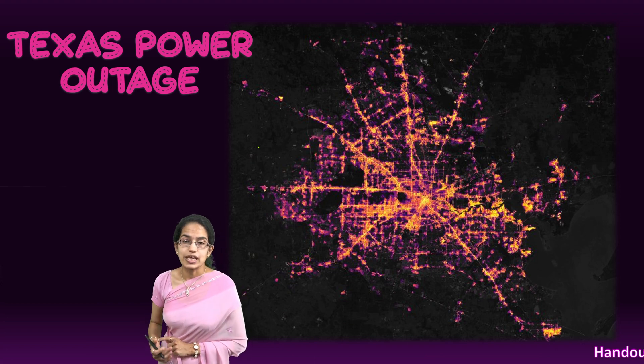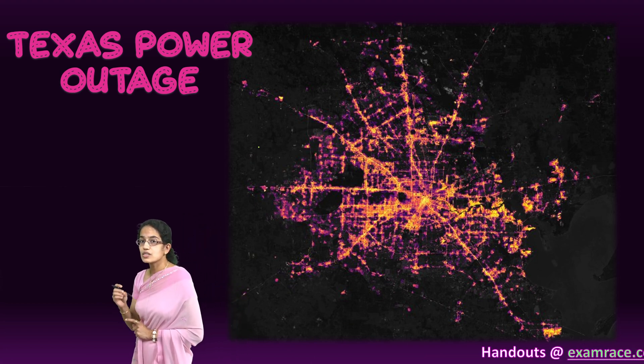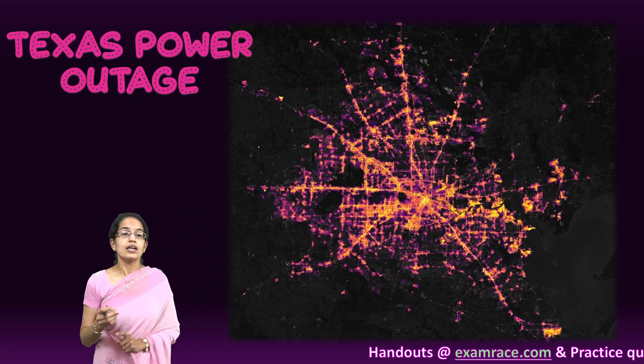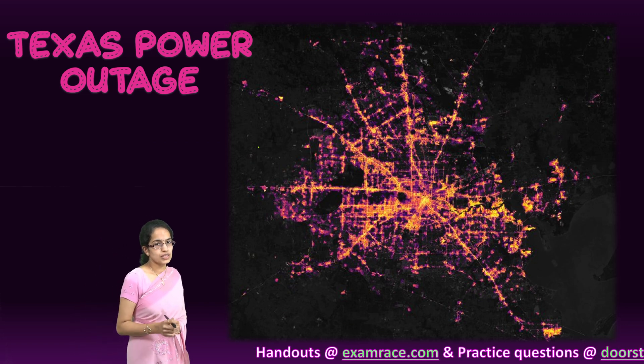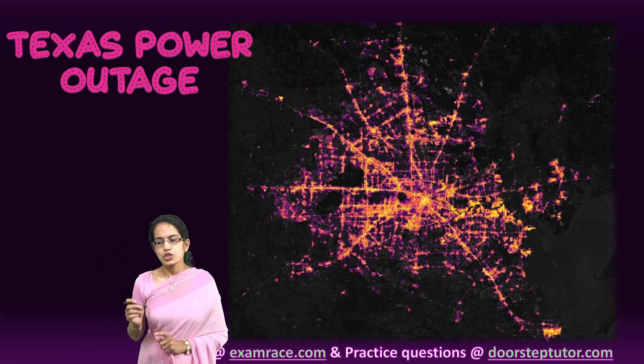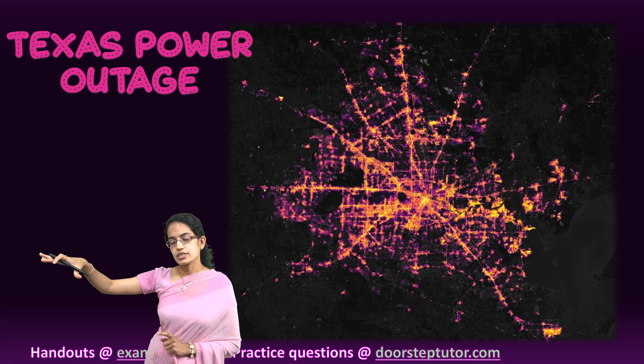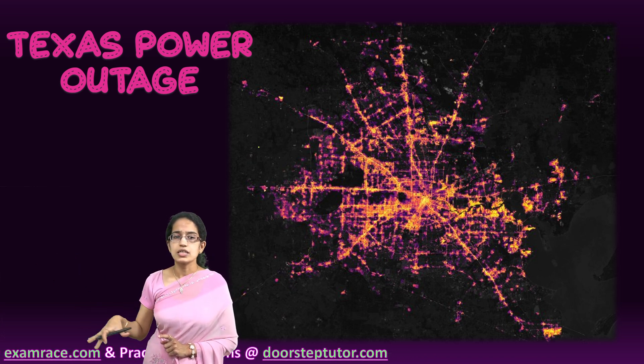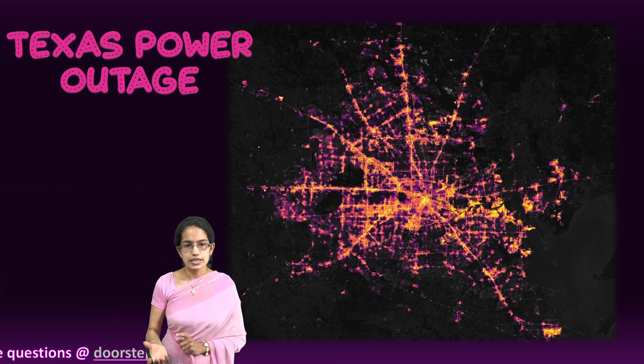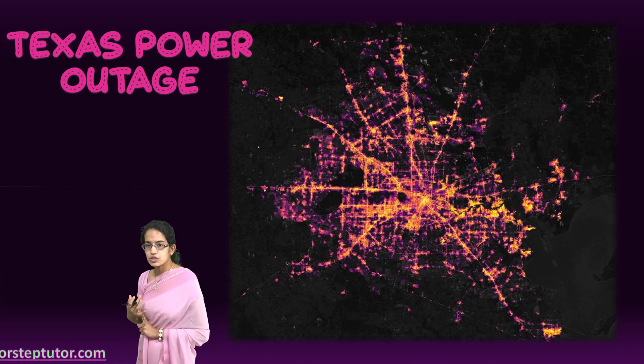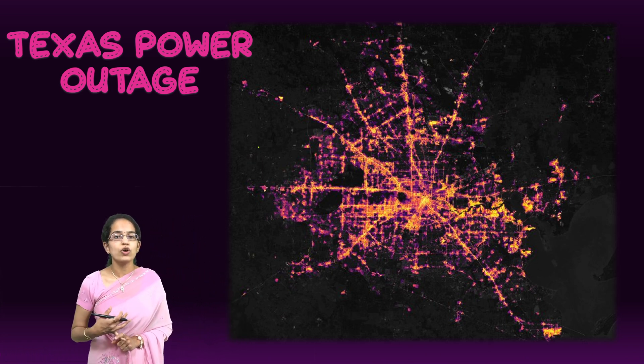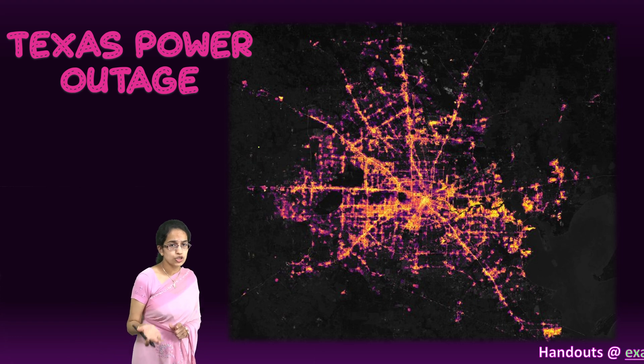When it comes to Texas, why it was news and why do you think this was a real cause of concern? What happened? Due to the Arctic air mass that spread to the regions of Southern America, there was an acute cold condition that was witnessed with heavy snowfall, and therefore the demand for electricity consumption shot up.